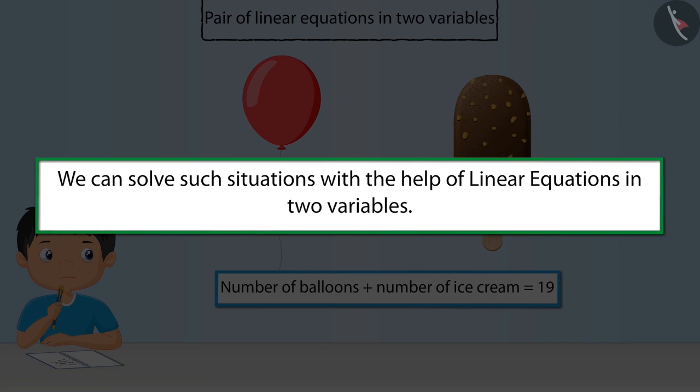We can solve such situations with the help of linear equations in two variables which will give us number of ice creams and balloons bought by Rahul. Let's see how.